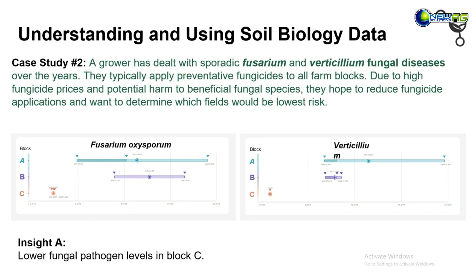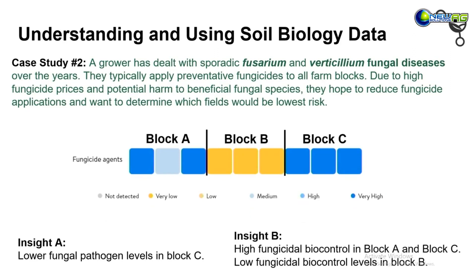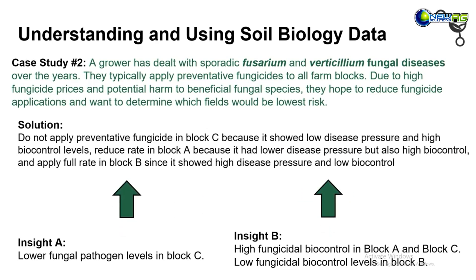While pathogen levels are important to how much damage you'll see, there are also natural biocontrol agents that can limit these diseases. Blocks A and C had relatively high levels of fungicidal microbes in the soil, but block B — which had high levels of pathogens — was low in biocontrol. The client might decide: no preventative fungicide in block C due to both low disease pressure and high fungicidal microbes; a reduced rate in block A due to lower disease pressure plus high biocontrol agents; and full rate in block B since it has the highest risk — high disease pressure and low biocontrol.